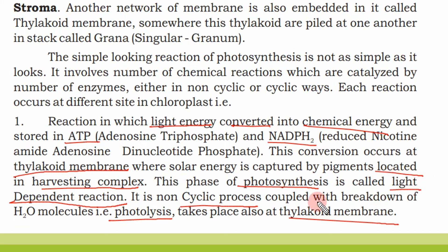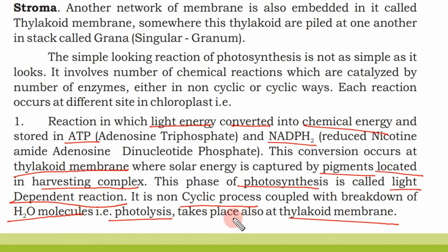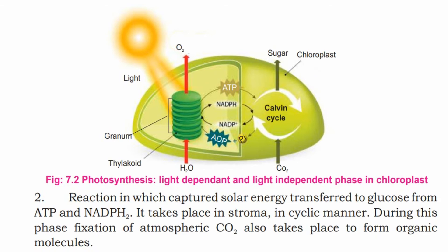In the harvesting complex, pigments including chlorophyll capture solar energy and transfer it. This phase is the light-dependent reaction. Photolysis — the breakdown of H2O molecules — takes place at the thylakoid membrane. Glucose is formed from ATP and NADPH2, and this process takes place in the stroma in a cyclic manner.